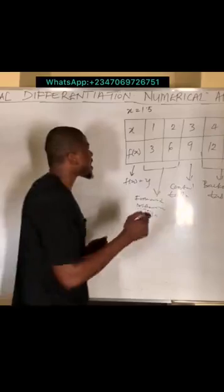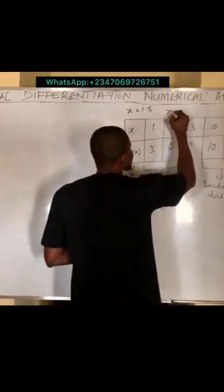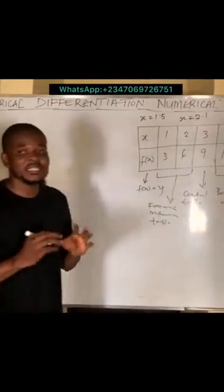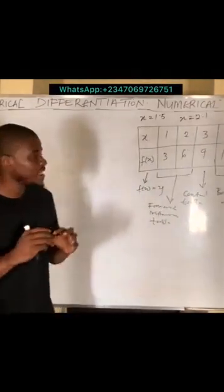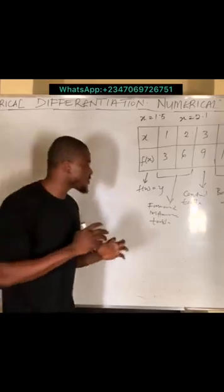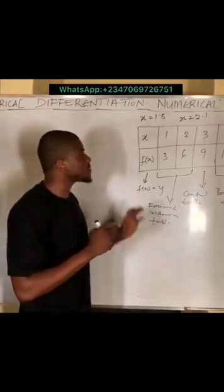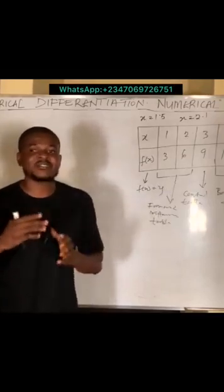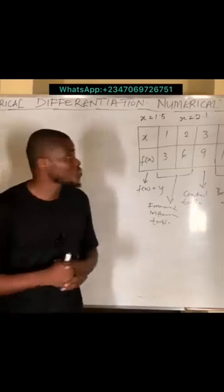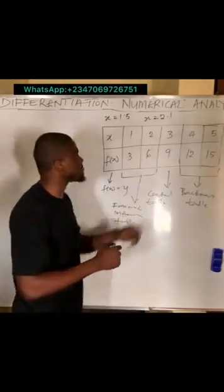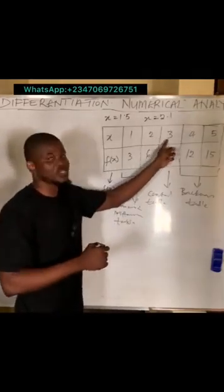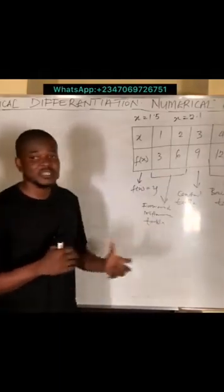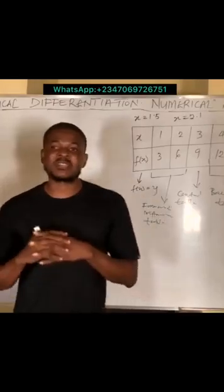Now, if you're asked to approximate when x is equal to 2.1, it's very important to understand that the forward difference table ends at two. Anything beyond two means it has started entering into the central table. So if x is 2.1, it has eclipsed two and is now approaching three — in that case, we are going to use the central difference formula to approximate that derivative.